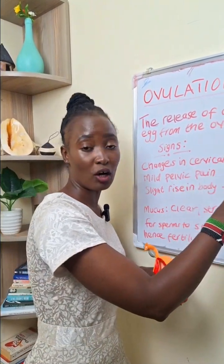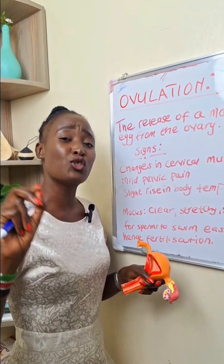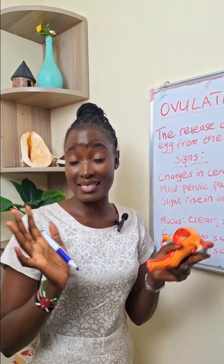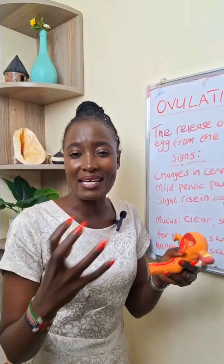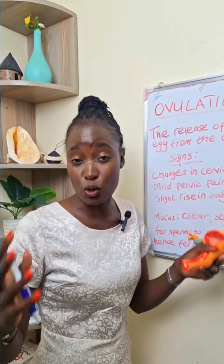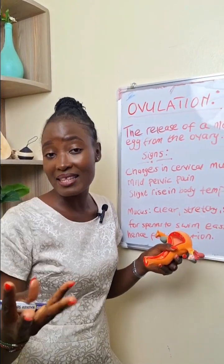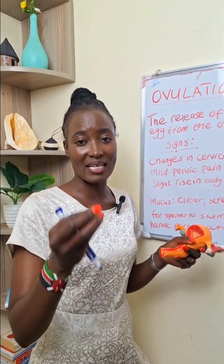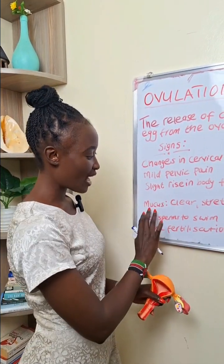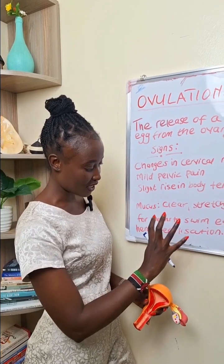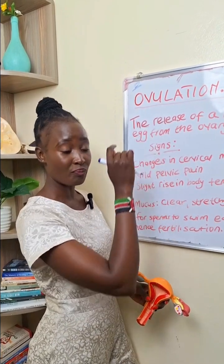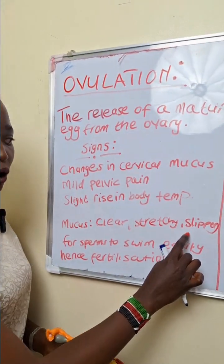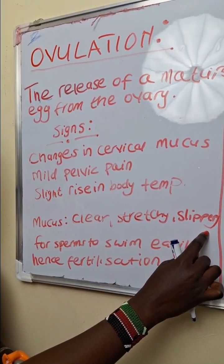Let us go back to the changes in cervical mucus. As a woman, you need to know how your mucus looks like during the cycle — it tells you a lot about your health, and most importantly your sexual and reproductive health. As written here, the mucus during ovulation is clear, stretchy, and slippery.